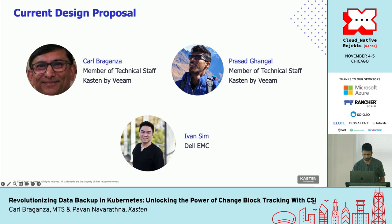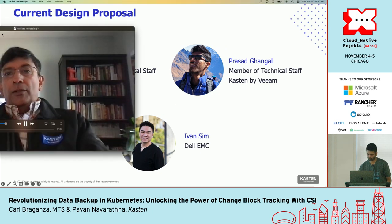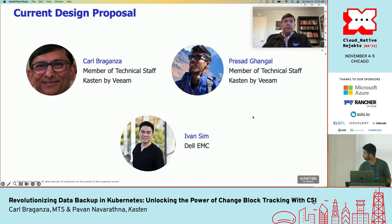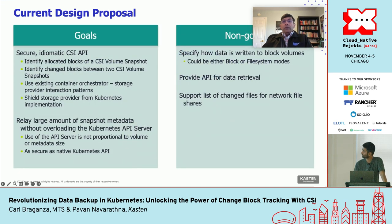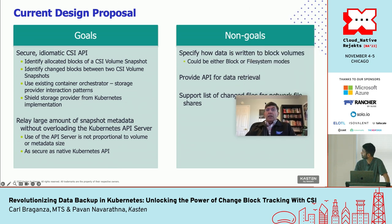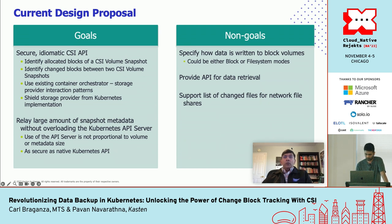This is the current design proposal slide — the third design iteration for this KEP. This iteration has benefited from the work done before, which exposed various security issues and highlighted the load that metadata retrieval places on the Kubernetes API server. This design iteration has two parts. The first is an extension to the CSI specification by adding a gRPC service to return snapshot metadata. There is a separate CSI PR with the gRPC specification. The second, which constitutes the bulk of the KEP, is how Kubernetes will implement this extension.